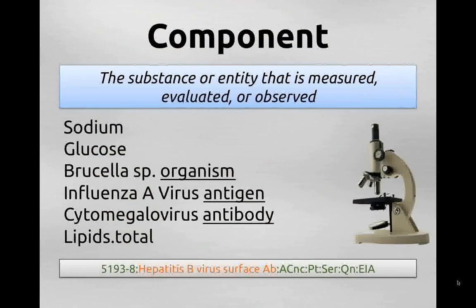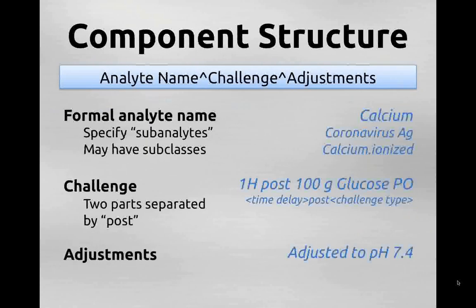The component is the first axis of the LOINC name. This is where we identify the substance or entity being measured, evaluated, or observed — things like sodium, glucose, and specific antigens or antibodies. Optionally, we can specify two other subfields as part of the component. The analyte is the required element, but we can optionally specify things like a challenge in the case of glucose tolerance tests — the timing and amount of challenge given — as well as, in a few rare cases, important adjustments that were part of the measurement, such as adjusted to a pH of 7.4.